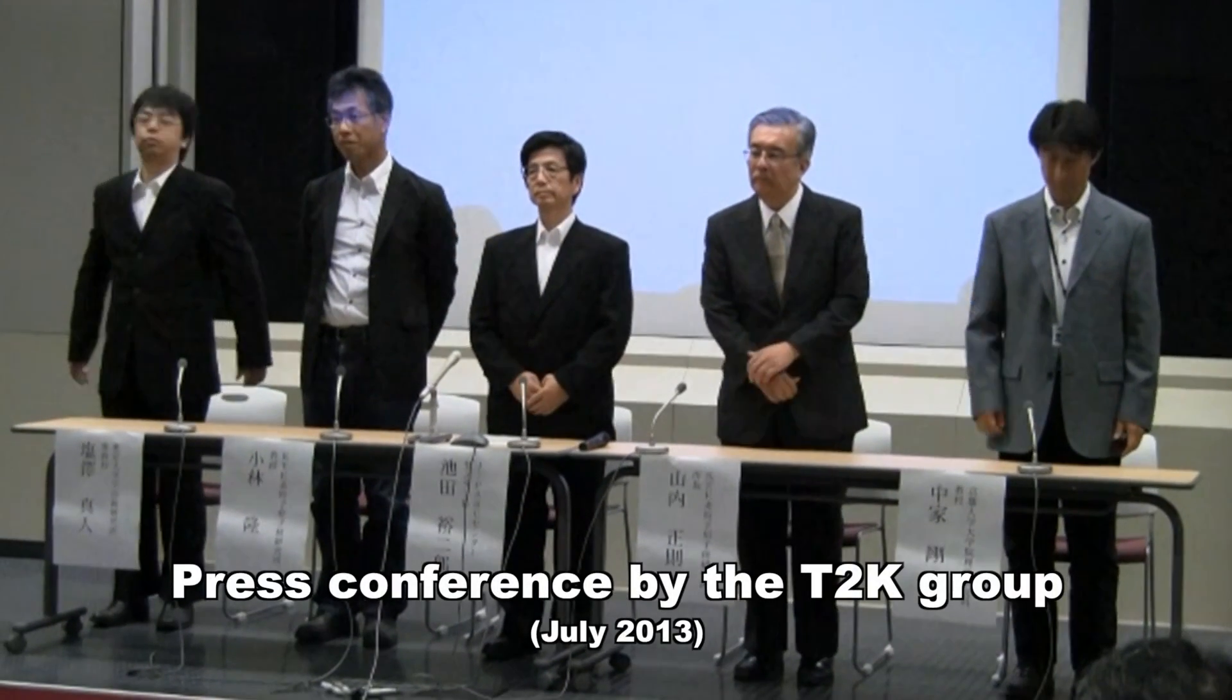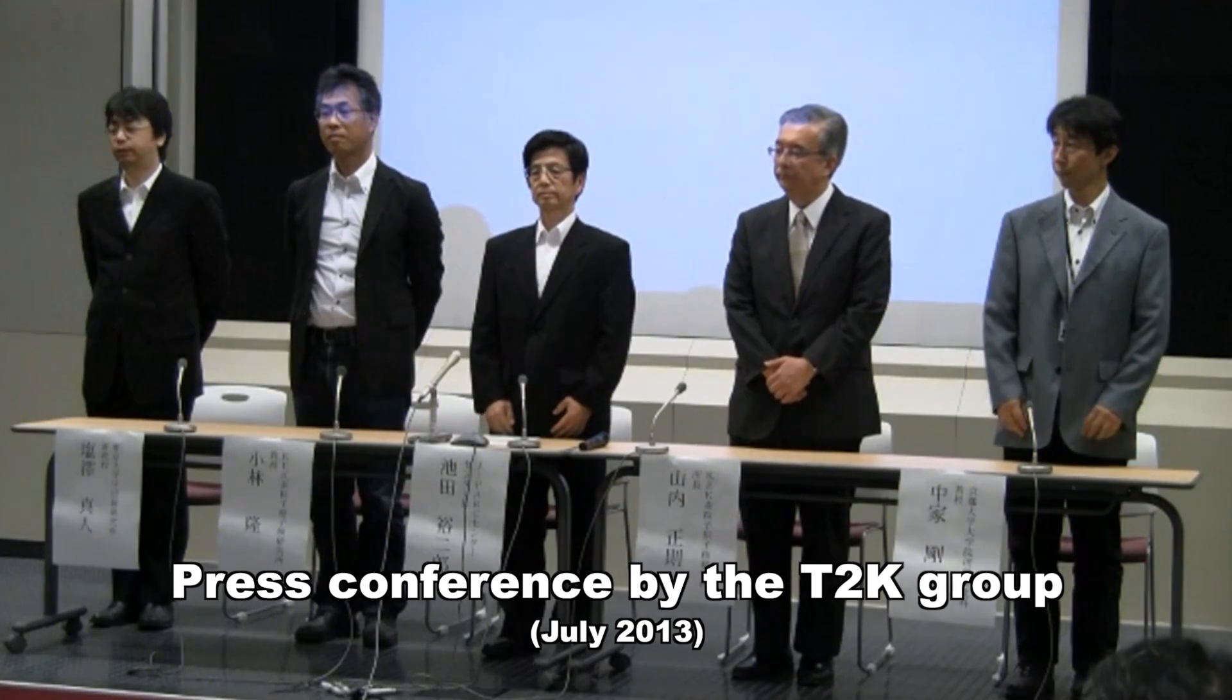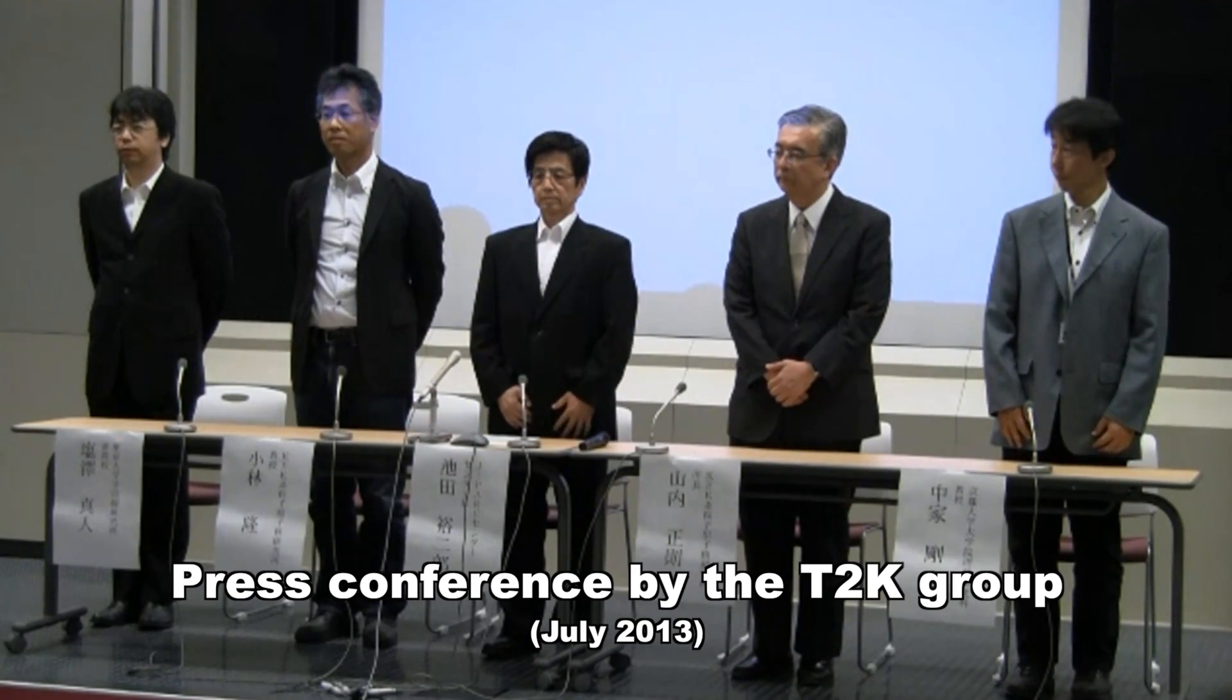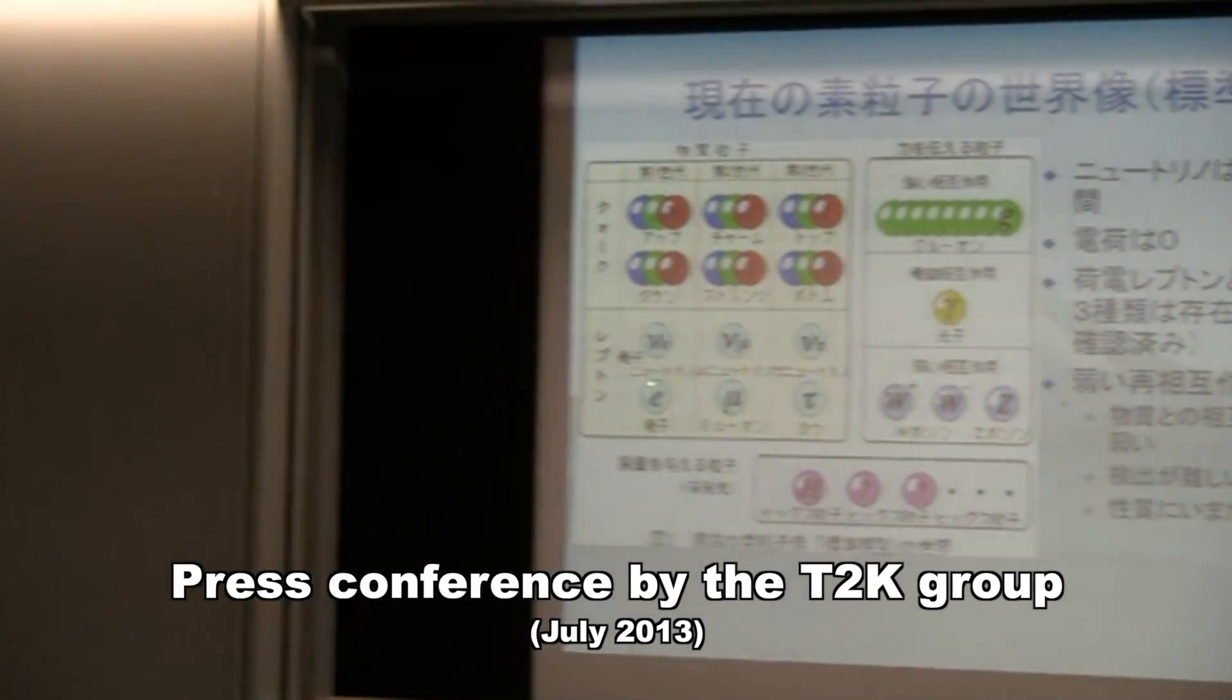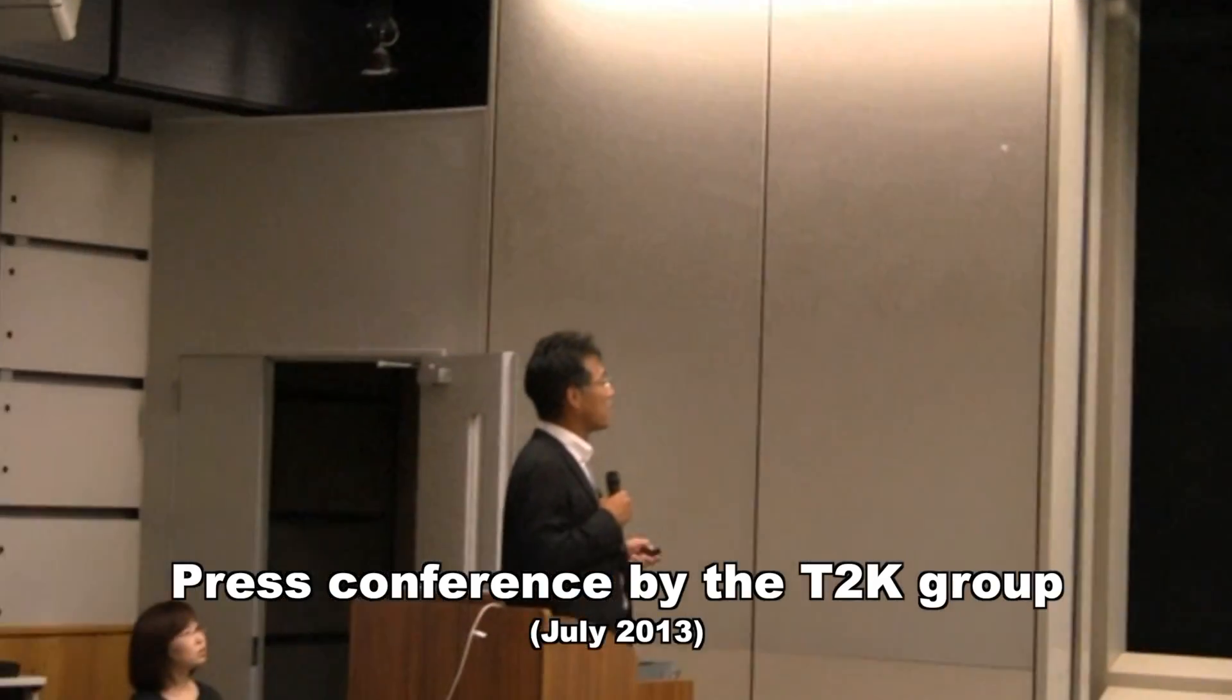In July 2013, based on data accumulated over four years, the T2K collaboration announced that they discovered oscillations from muon neutrinos into electron neutrinos.